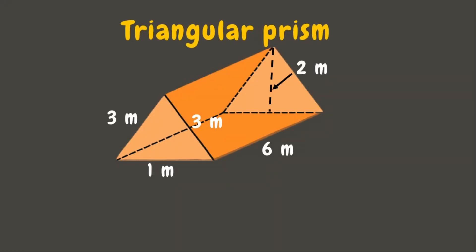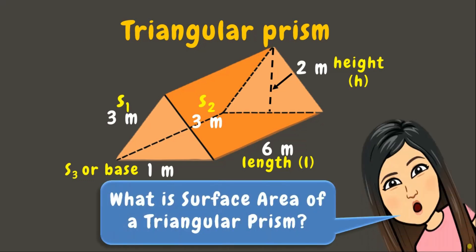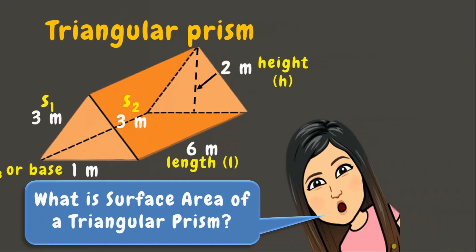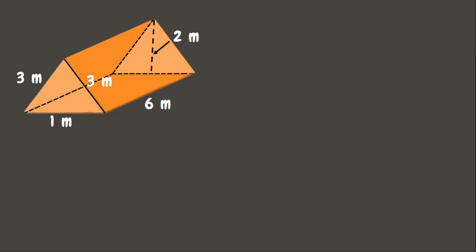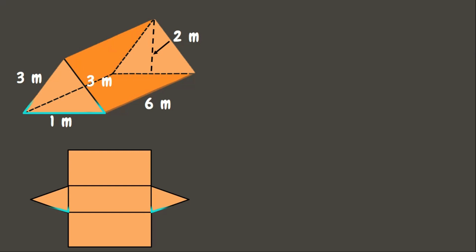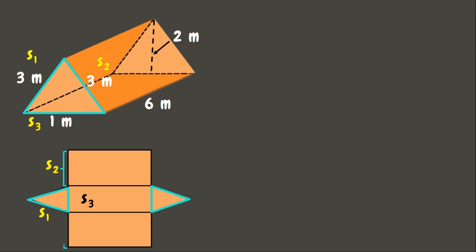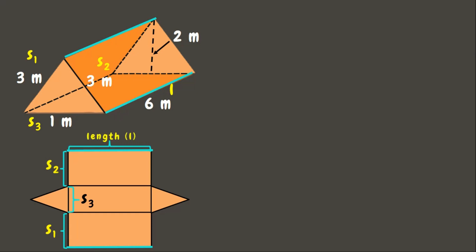Now we have a triangular prism where side 1 and side 2 of the triangle are the same, while its third side — the base of the triangle — measures 1 meter. Its length measures 6 meters, and the height of the triangle measures 2 meters. Let us unfold the figure. We can see the triangle has three sides: side 1, side 2, and side 3. The width of each rectangle corresponds to one side of the triangle, and the length is 6 meters.